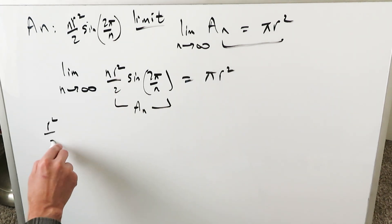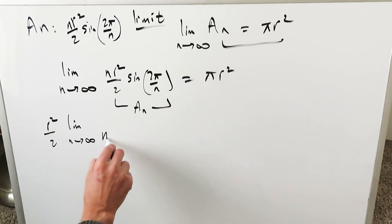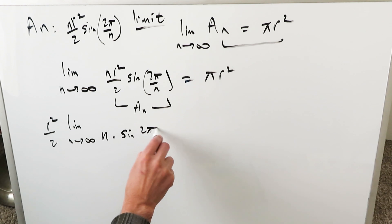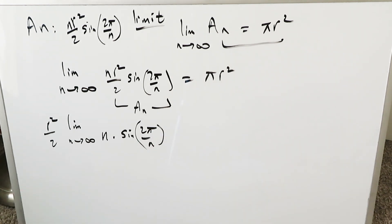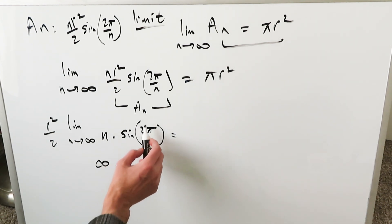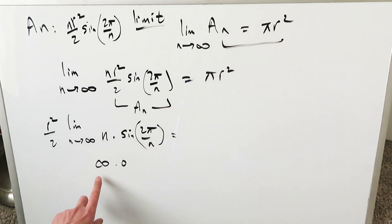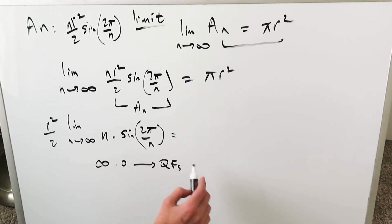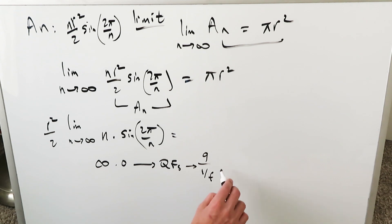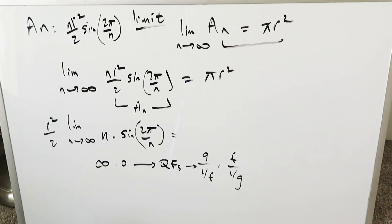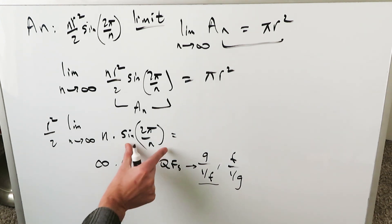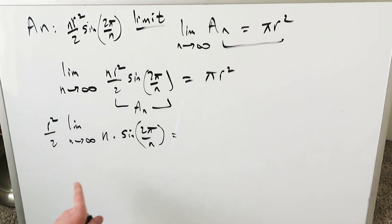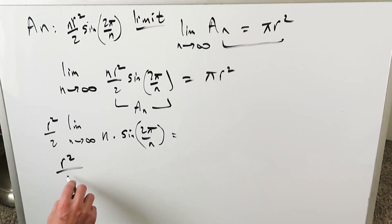Pull r²/2 out as a coefficient. Then you're looking at the limit as n approaches infinity of n times sin(2π/n). I'll show the formalized structured approach, though there's more than one way. If you put infinity in place of n, you have infinity times sin(2π/infinity), which is sin(0) = 0. You have an indeterminate product of the type ∞ · 0, so you convert this into a quotient form — you can put g over the reciprocal of f, or f over the reciprocal of g — and then apply L'Hôpital's rule.